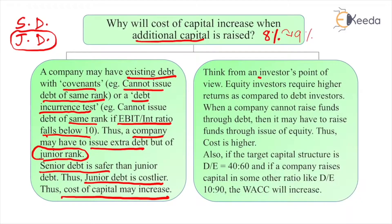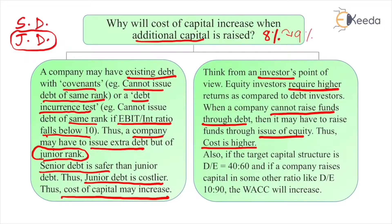Second reason: think from an investor's point of view. Equity investors require higher returns compared to debt investors — equity carries more risk, so they expect more. When a company cannot raise funds through debt, it may have to raise funds through the issue of equity, and thus the cost will be higher. This is another reason why WACC would increase.